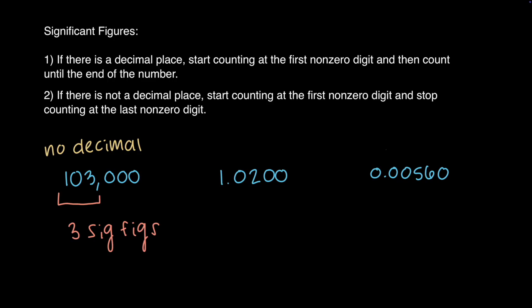For 1.0200, there is a decimal place, so I will start counting at the first non-zero digit and count until the end of the number. Scanning from left to right, 1 is the first non-zero digit, and then I count until the end of the number. The value has 5 sig figs.